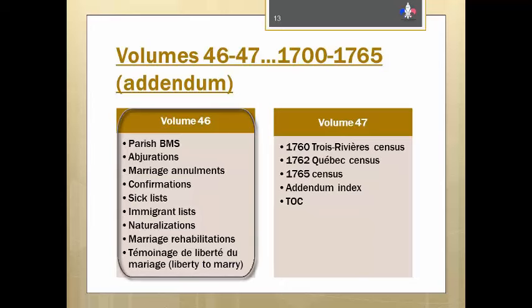Volume 46 contains additional records for the 1700 to 1765 time period, grouped first by record type — baptisms, marriages, then burials — then by parish numerical order, and within those by date of record. Then come the abjurations, including many of the captives carried to Canada during the French and Indian Wars, marriage annulments, confirmations, sick lists, immigrant lists, naturalizations, marriage rehabilitations, and evidence of freedom to marry — meaning certification by those wanting to get married in New France that they were not already married in France or whichever country they came from.